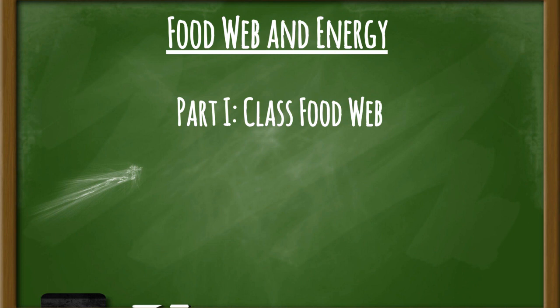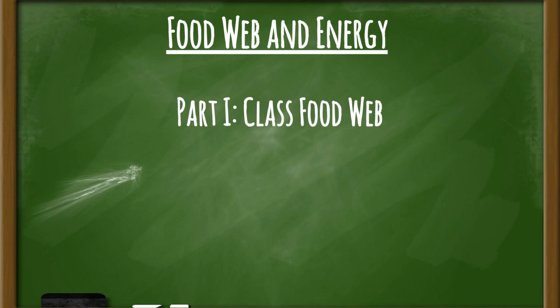For Part 1, first you'll explore an outdoor habitat with your class, using your student journal to write down any organisms you find. Then classify each organism as a decomposer, producer, or consumer. Back in the classroom, create a food chain on the bottom part of your student journal beginning with the sun, and explain how it relates to a larger food web. Follow your teacher's directions to create the class food web.